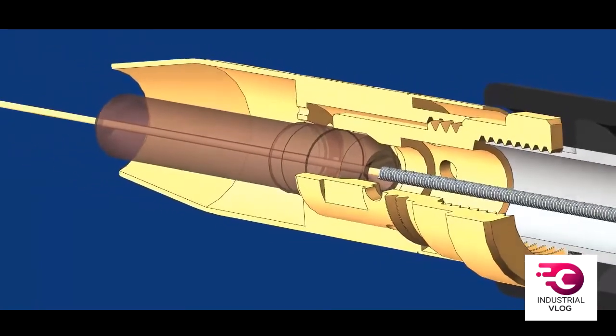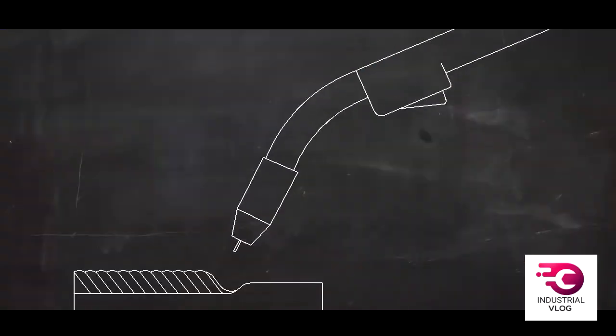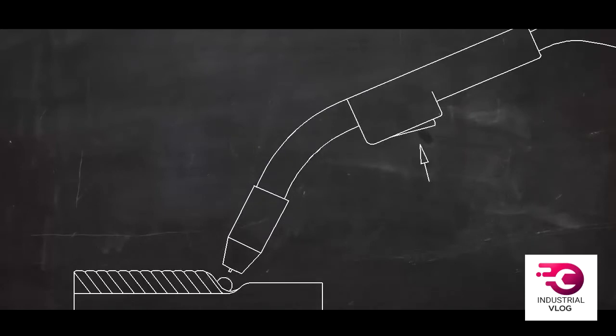The wire is fed continuously when the trigger on the welding gun is pulled. When this trigger is pulled, it also switches on the welding current and a shielding gas.